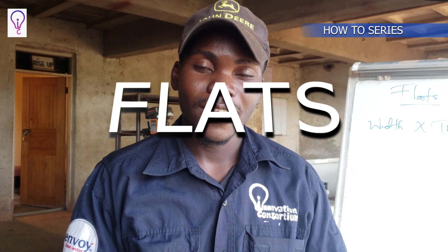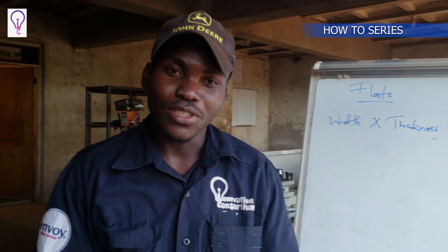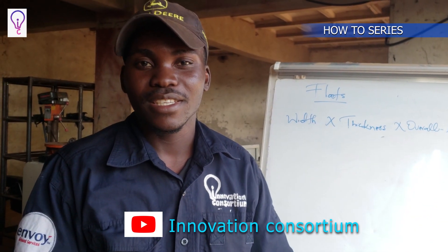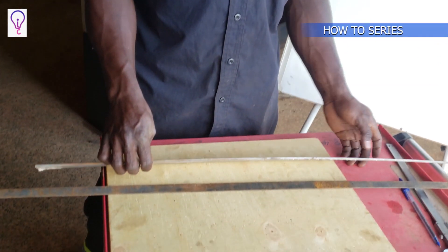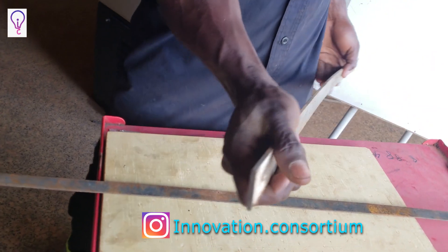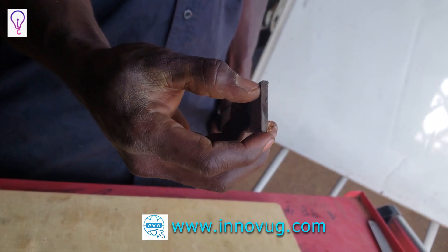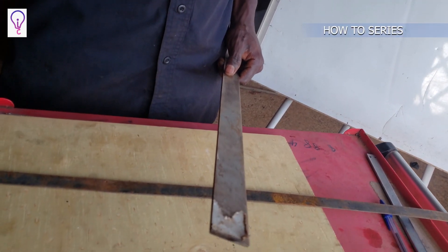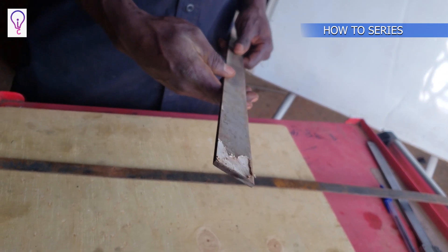Hello everyone, my name is Isaac from the Innovation Consortium. Today I'd like to share with you about flats — what they are, where we use them, and how to use them. A basic definition of a flat: it's just a rectangular bar. It might be made of steel, stainless steel, alloy steel, or copper. It's rectangular in cross-section — thickness, width, and length — and that makes it a flat. We use flats in fabrication or any other metal works.